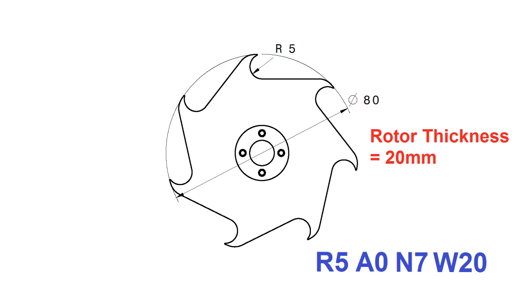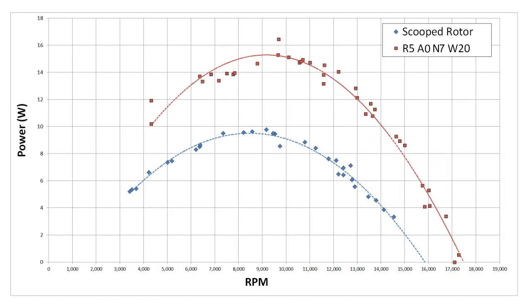The particular rotor you see here was the one from my previous video, which had seven notches with a 5mm radius. Its power curve is shown on this graph in red, topping out at 16.4 watts at 9700 RPM.